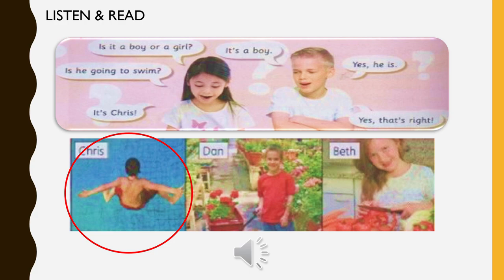Contoh dalam slide ini, cikgu berikan tiga gambar sahaja. Kemudian kedua-dua kamu akan lihat pada gambar dan mulakan tanya soalan. Contoh, sekarang kamu tengok gambar Chris kan? Jadi kamu tanya lah adik-beradik kamukah ataupun mak bapa kamu soalan: Is it a boy or a girl? Mereka akan jawab. Kalau lelaki, dia akan cakap it's a boy. Lepas itu untuk kepastian, kamu tanya lagi: Is he going to swim? Dan kalau mereka jawab yes, he is, nampak sekali dekat sini hanya ada seorang lelaki yang akan pergi berenang iaitu Chris. Jadi kamu jawab: It's Chris.